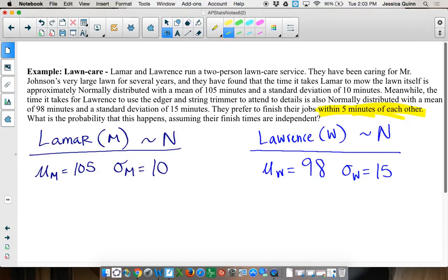So if I want to know, like, the time in between when they finish, let's just say on a random day, Lamar takes 100 minutes and Lawrence takes 80 minutes. Am I going to add those and have it take 180 minutes for the whole thing? No, I want to know that Lamar finished 20 minutes earlier than Lawrence, right?